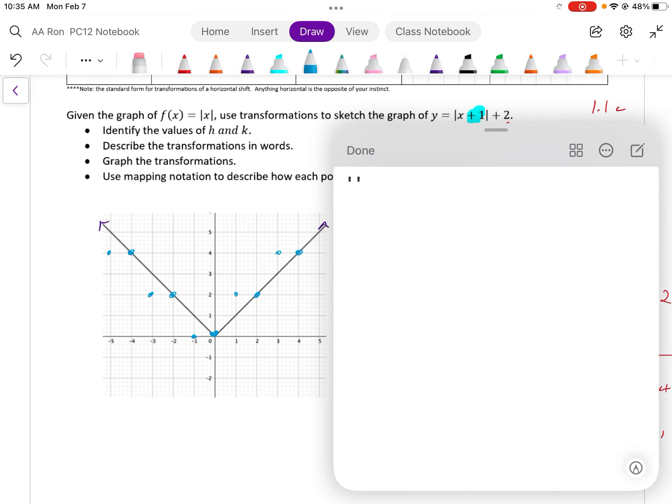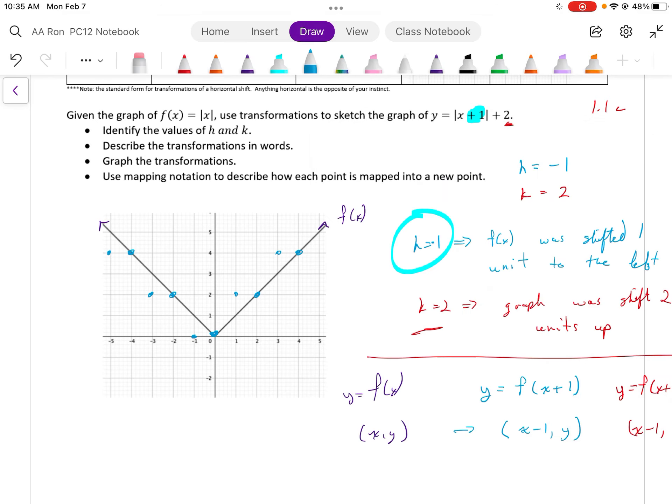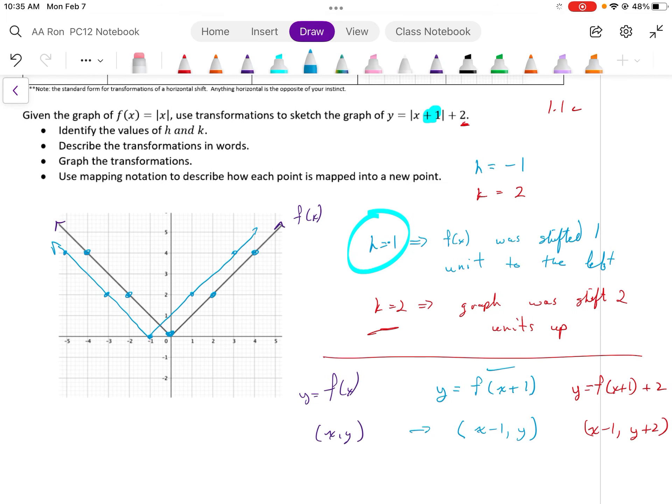And now I have my function, y equals f, open bracket, x plus 1. Now I'm going to shift the blue graph two units up. Just take every point I have and shift it two units up. The points that I'm using are the most recent points. There we are. And I shift to two units up, and there's the red graph.